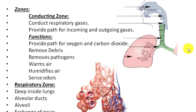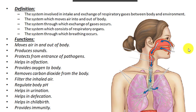Other than gaseous exchange, what else does the respiratory system do? Here are the functions of the respiratory system. The first function: it moves air in and out of the body. The second function: it produces sound. The organ of phonation in our body is the larynx, and the larynx is part of the respiratory system, so if your respiratory system stops working you will not be able to produce sound.